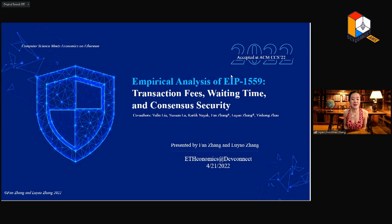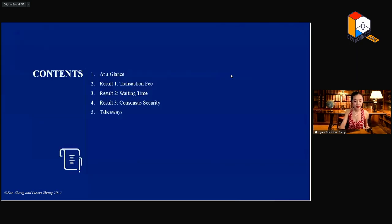This is a very exciting work, empirical analysis of EIP-1559, transaction fees, waiting time, and consensus security. So today we will present this talk with this table of contents. First, I will have some background introductions for the general principles. Then we will break it down to present three major results. Finally, it will be the takeaways. I will be presenting the first half, and then Fang will take over to present the next half.